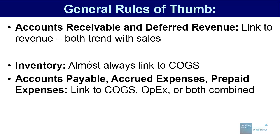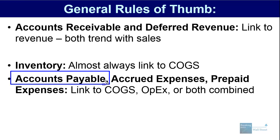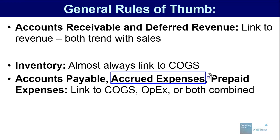Items such as accounts payable, accrued expenses, and prepaid expenses can go in many different ways — you could link them to COGS, operating expenses, or both combined, depending on what's in them and the type of company. For example, if it's a manufacturing company that spends a lot on buying inventory from suppliers, you'd probably link accounts payable to COGS. On the other hand, for a software company you might link this to operating expenses instead. Accrued expenses and prepaid expenses tend to be linked to operating expenses in most cases, but it depends on the company and exactly what's in these items.